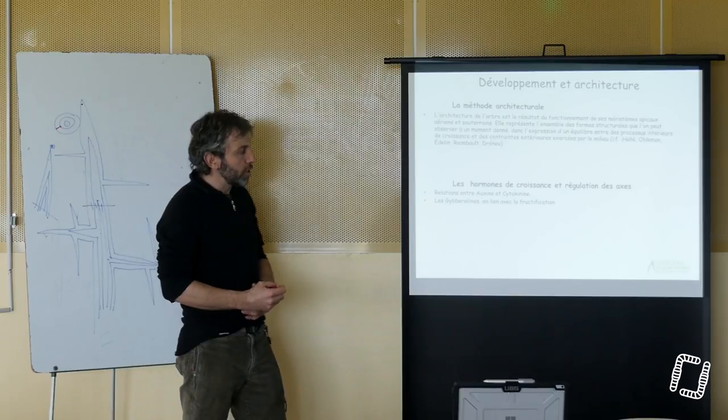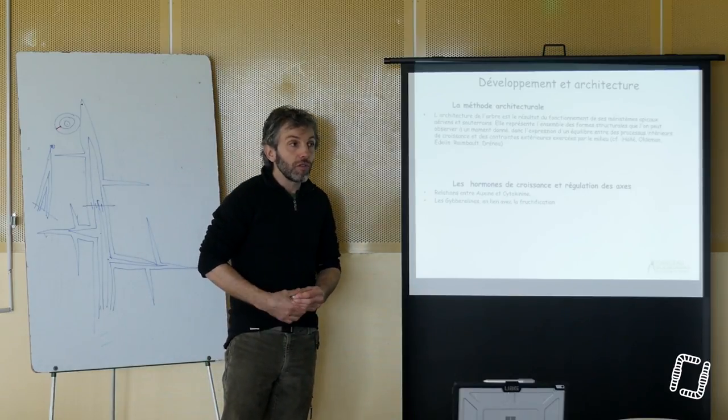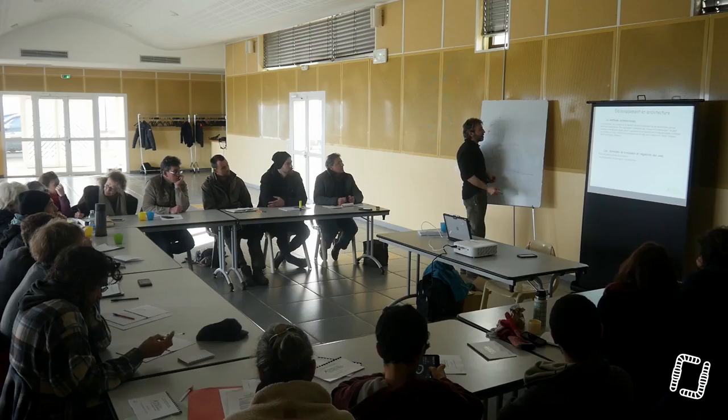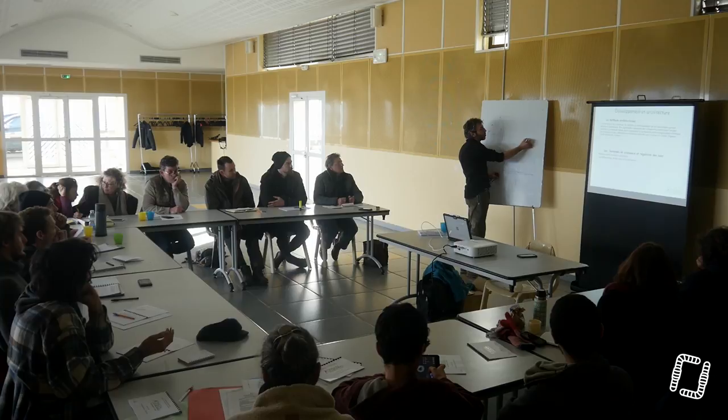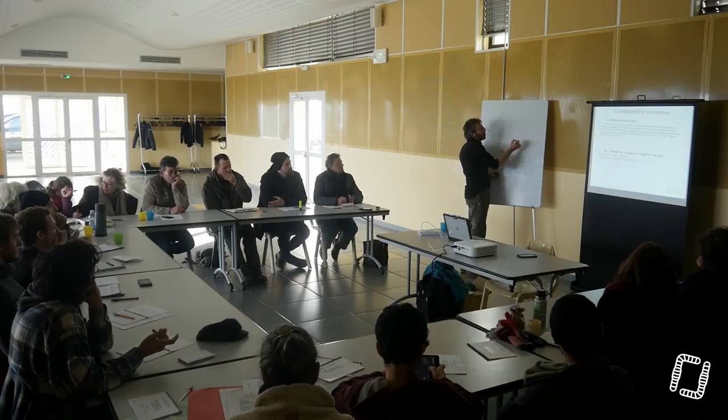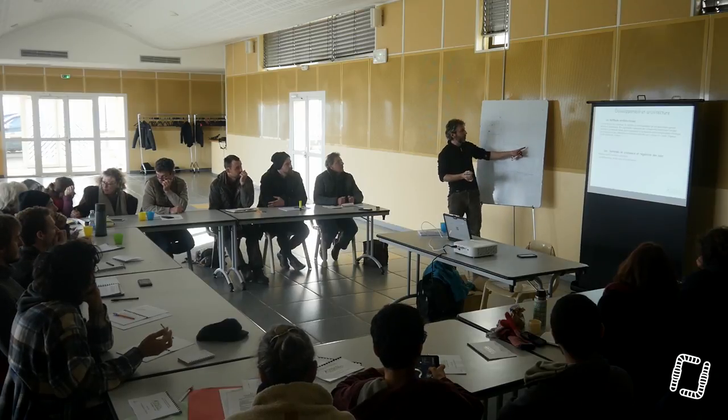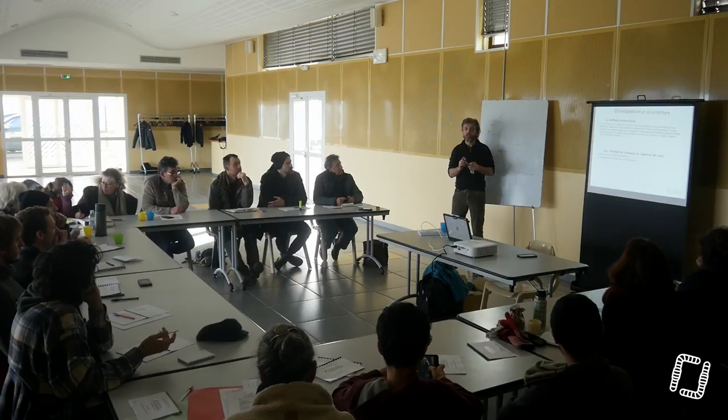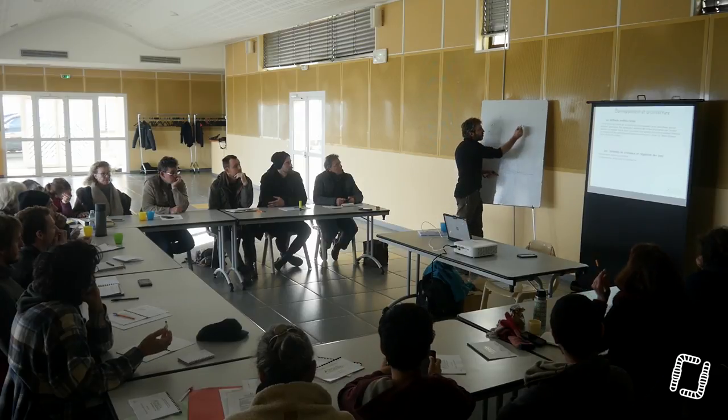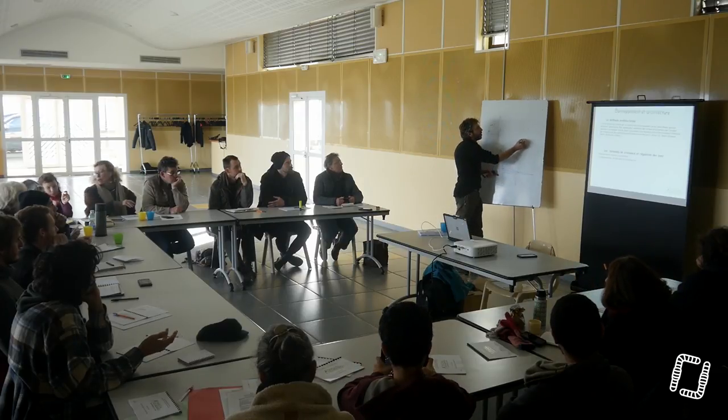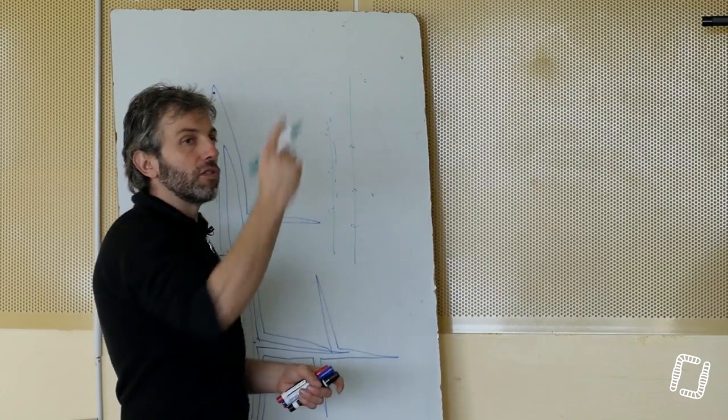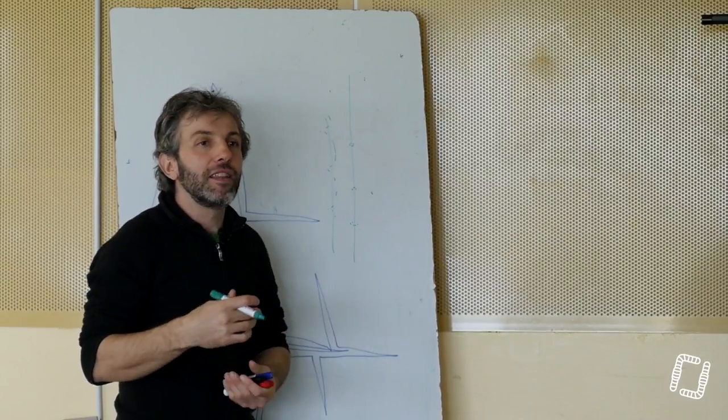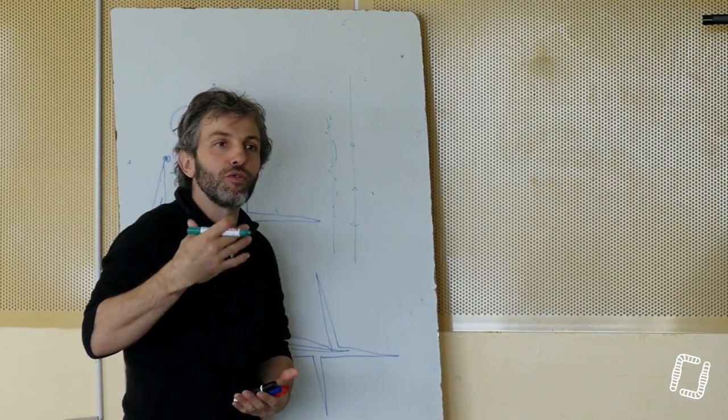Cette architecture-là, elle est différente suivant chaque végétal. Vous voyez bien que sur une pousse de un an, vous avez des arbres qui vont faire des verticilles, donc avec tous les bourgeons qui vont pousser côte à côte en forme de verticilles, comme on a chez les résineux, mais aussi par exemple chez le ginkgo biloba. Et puis vous avez ceux qui sont spiralés, donc avec des bourgeons qui poussent tout le tour. Vous avez ceux qui font des bourgeons opposés, ceux qui font des bourgeons alternes.